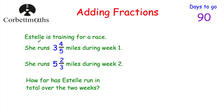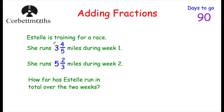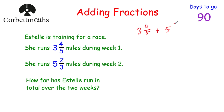Now let's have a look at a wordy question. We're told that Estelle is training for a race and she runs three and four fifth miles during week one, and she runs five and two thirds miles during week two. How far has Estelle run in total over the two weeks? We want the total distance, so we add the two distances together: three and four fifths plus five and two thirds. Let's make them top-heavy fractions. Three and four fifths: three times five is 15, plus four is 19, so that's 19 fifths. Five and two thirds: five times three is 15, plus two is 17, so that's 17 thirds.